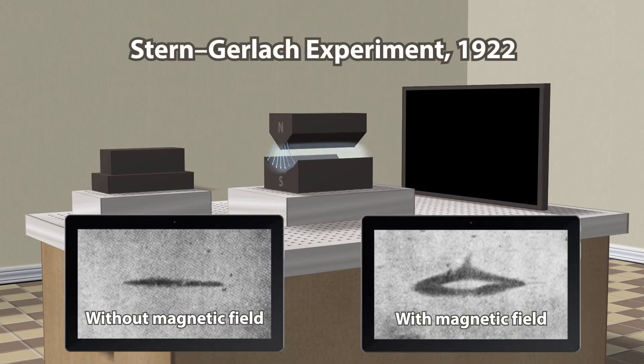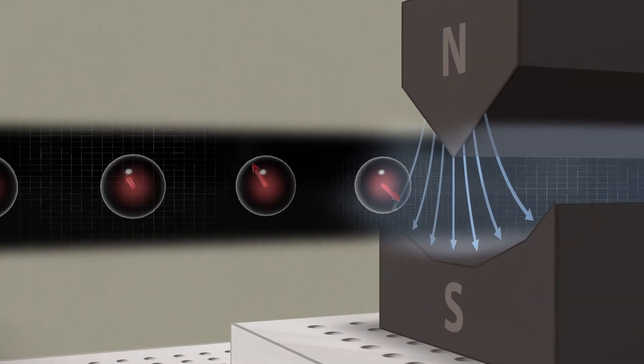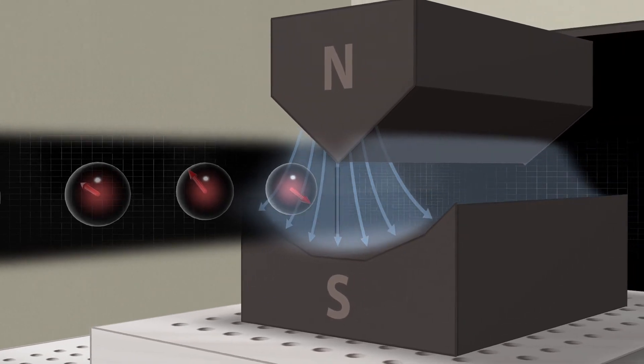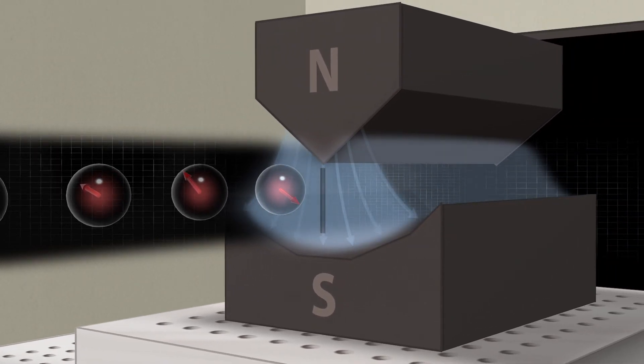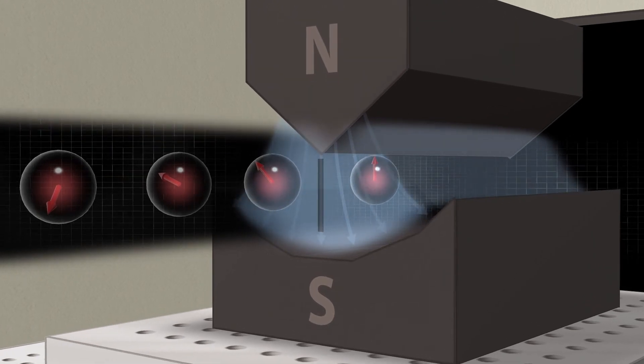In U2-7, slide 3, we discussed the Stern-Gerlach experiment. The direction of the inhomogeneous magnetic field defines the z-axis. Due to the interaction of the arbitrary initial spin with the magnetic field, the spin direction changes to become an eigenstate.